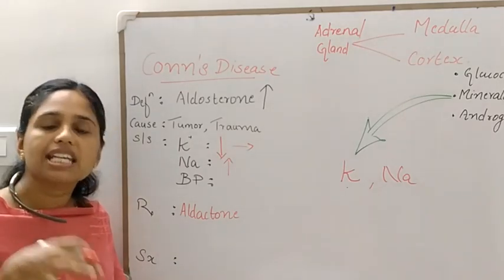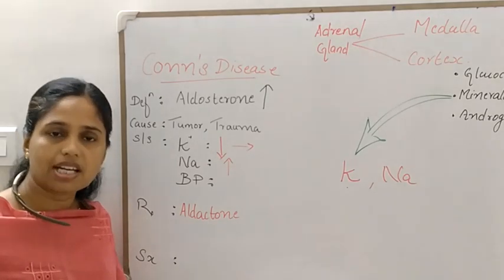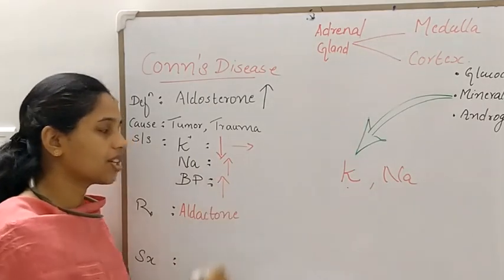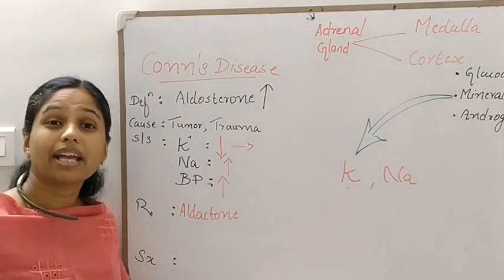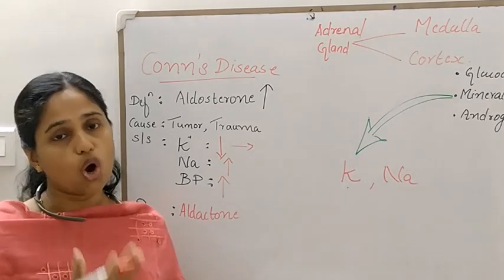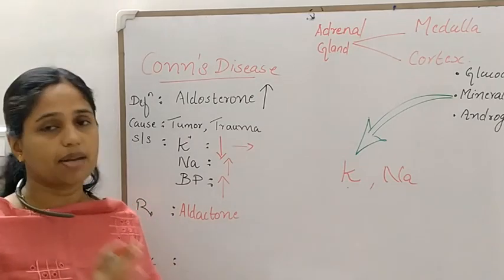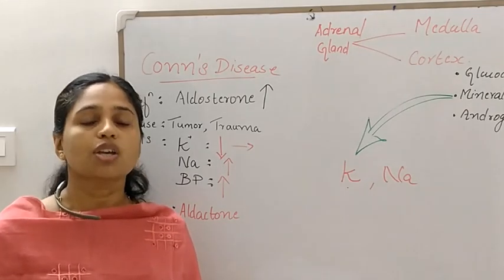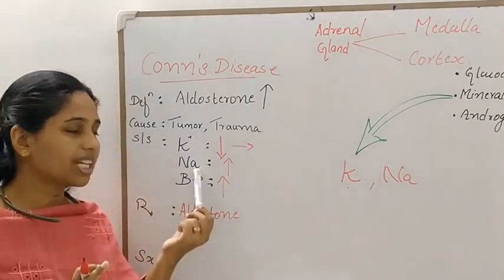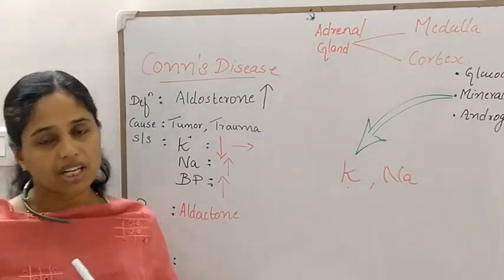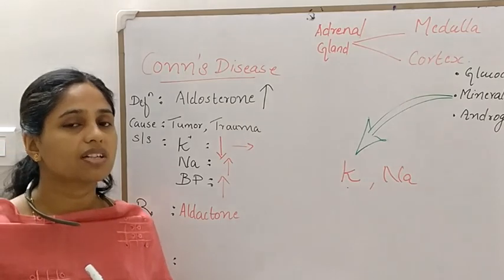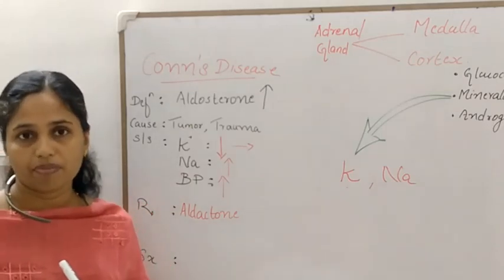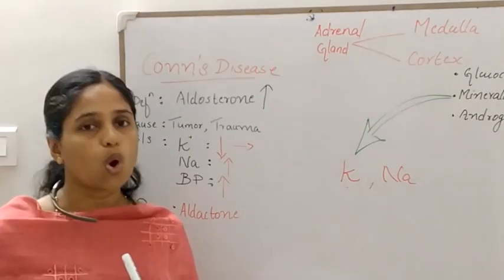With sodium retained, blood volume increases, and blood pressure increases. Symptoms include headache, irritability, and hypertensive symptoms. Hypokalemia can also cause myalgia. So the main signs and symptoms are electrolyte imbalance — hypokalemia and hypernatremia — along with hypertension, ECG changes, and symptoms associated with both hypokalemia and hypernatremia.